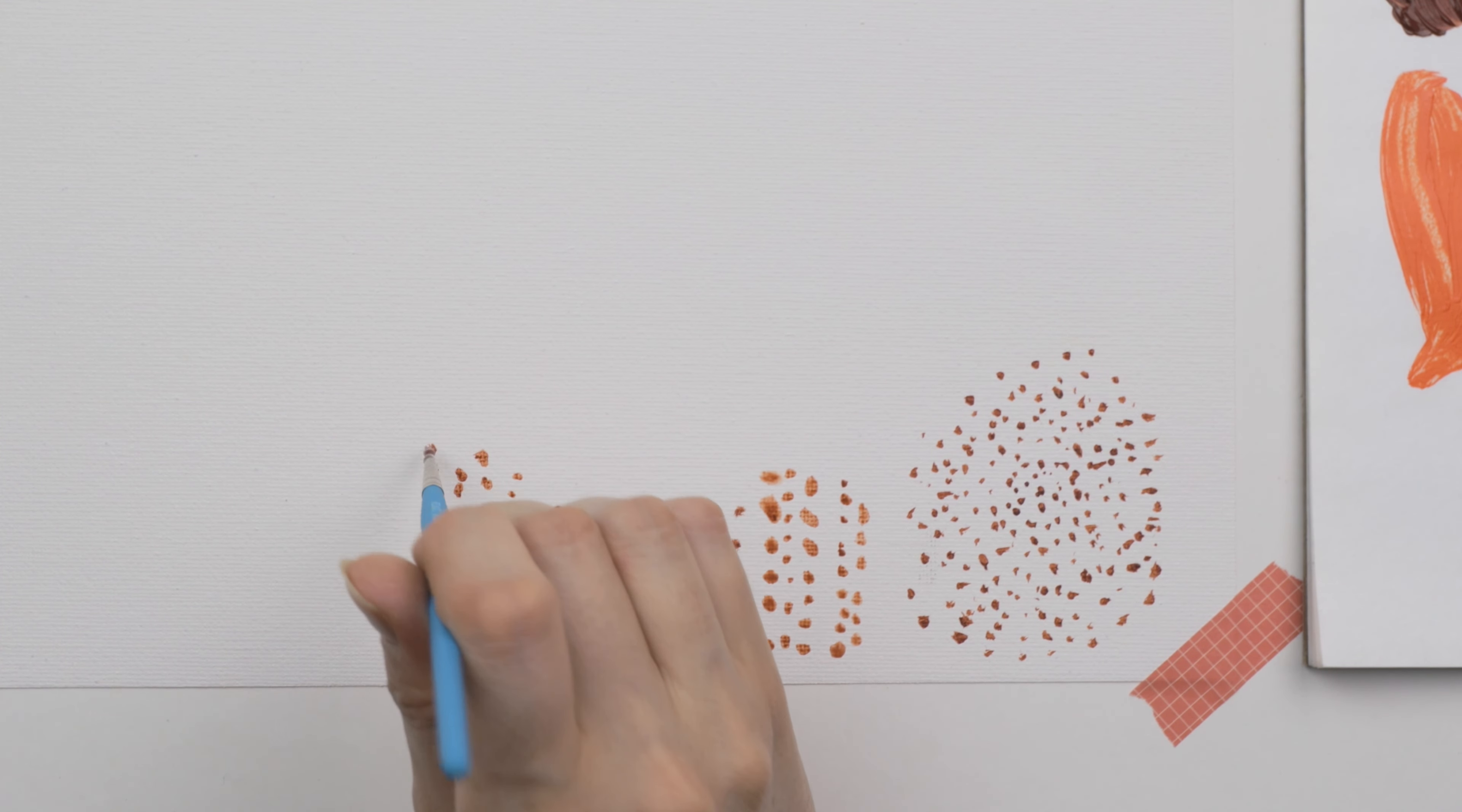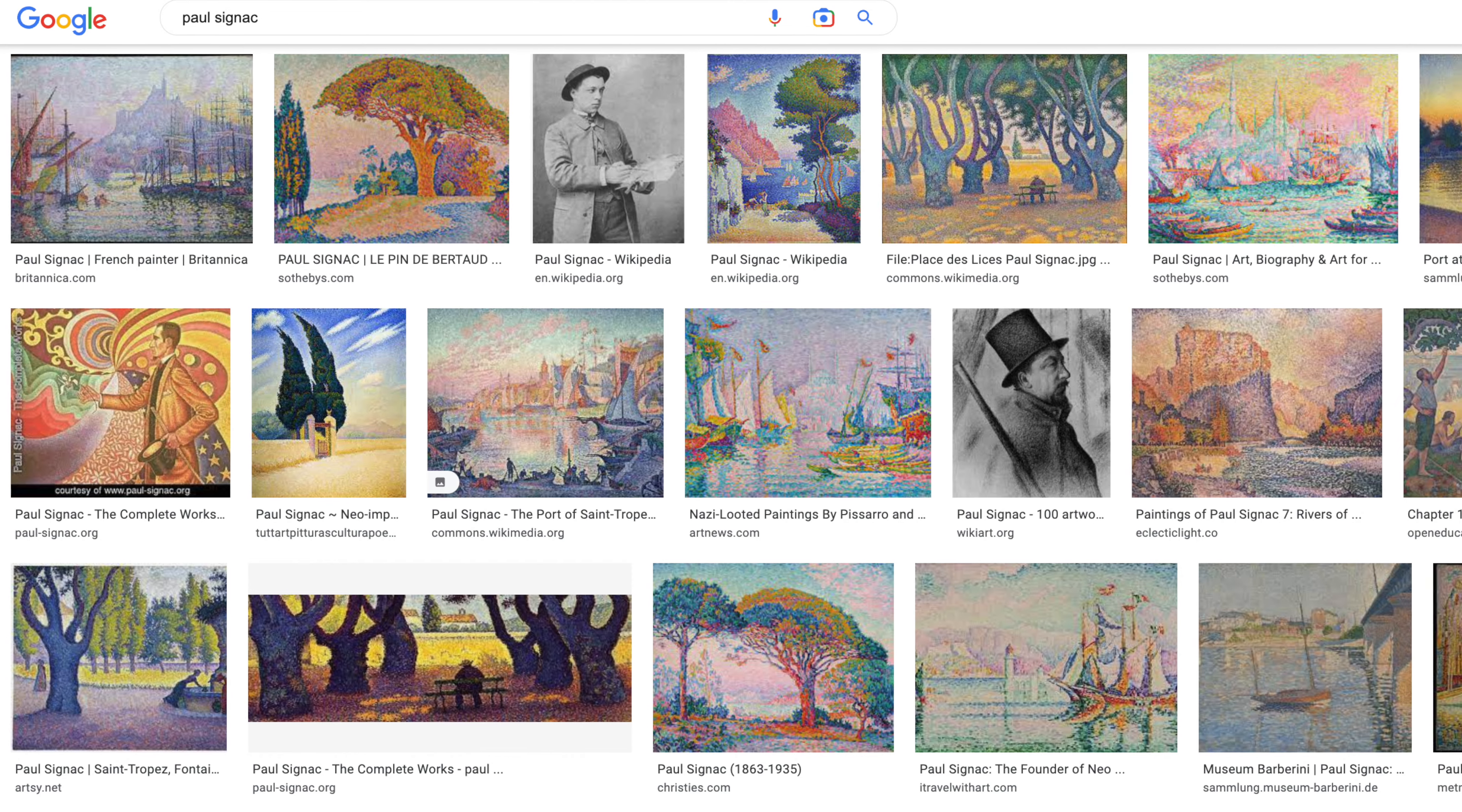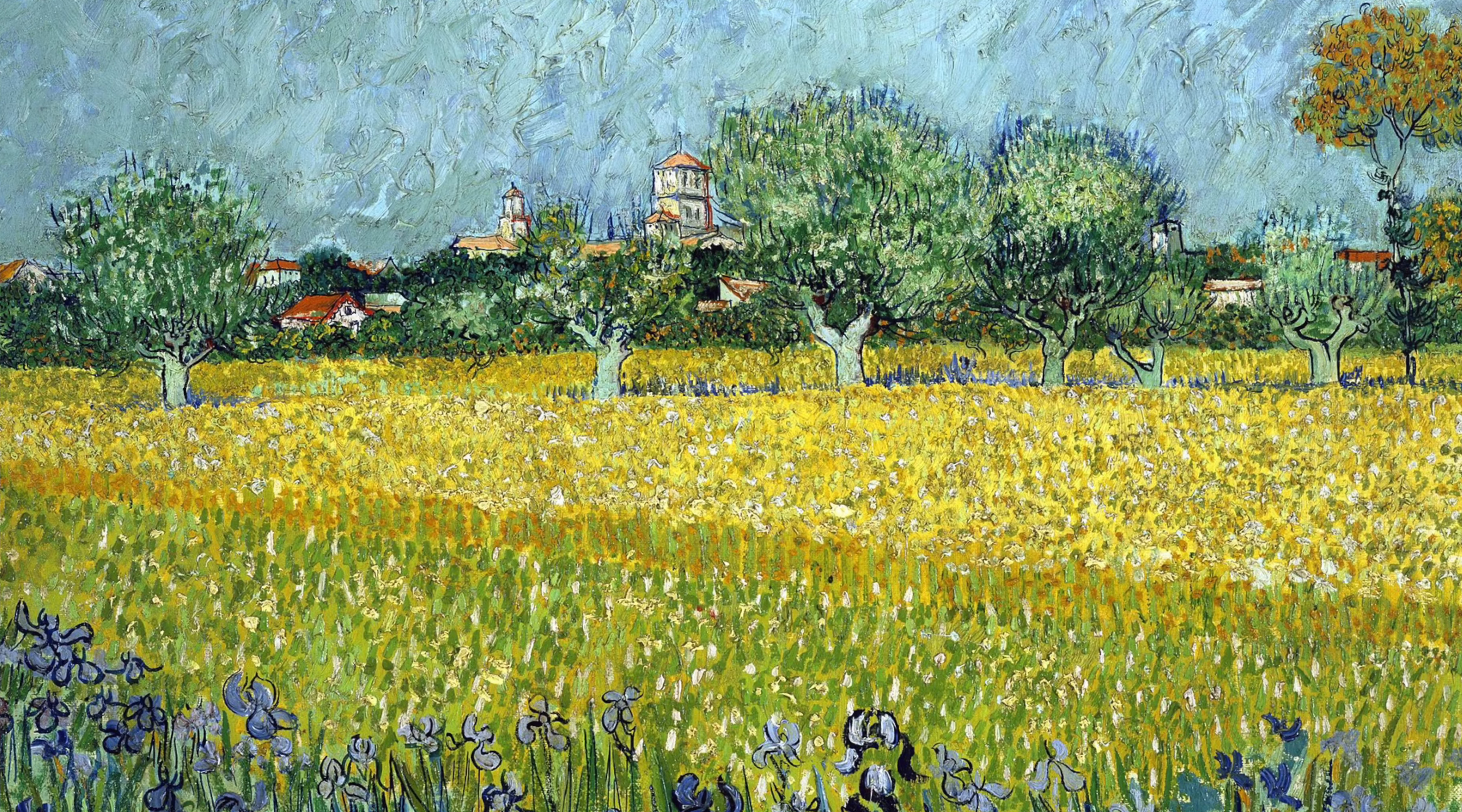So pointillism was created in the 1880s in Paris by George Seurat and Paul Signac. This movement came after Impressionism, and it was meant to be more of a scientific approach to art. Van Gogh also used pointillism in his art as well.